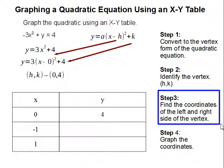Step 3: Find the coordinates of the left and right side of the vertex. Since our vertex is (0, 4), the left side of our vertex would be negative 1, since that is to the left of 0, and the right side would be positive 1.